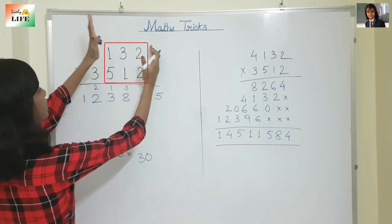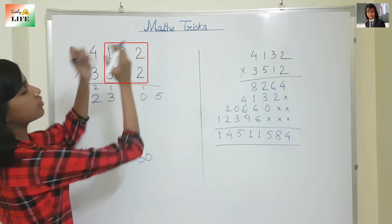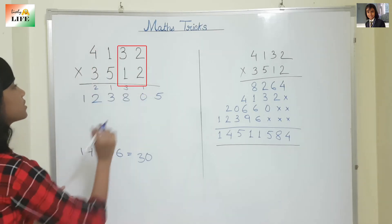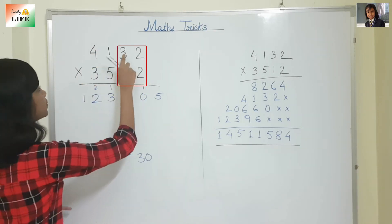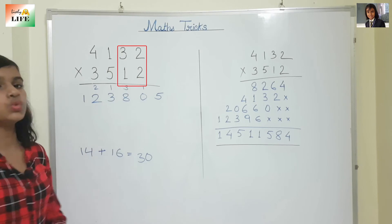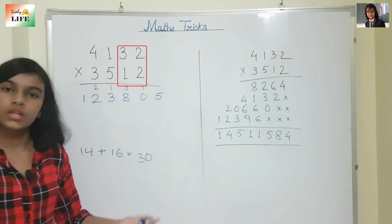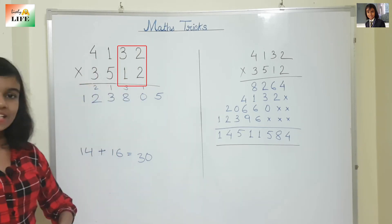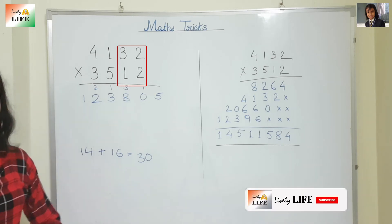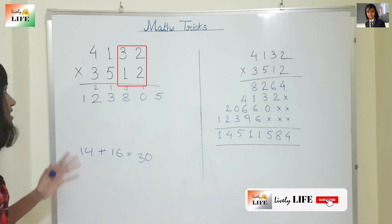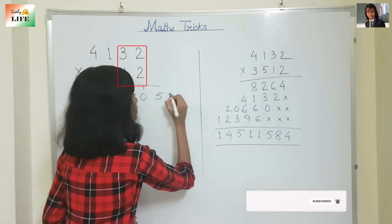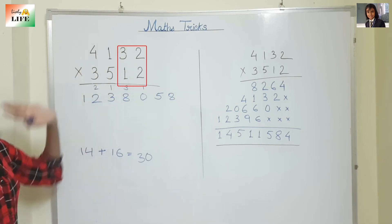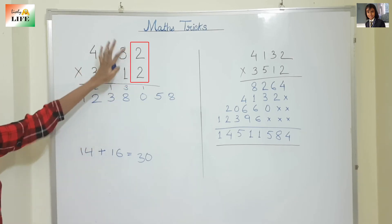Now again we reduce another column from the left side, so this is now 2 columns. Cross multiplication: 3 into 2 is 6, 2 into 1 is 2, so 6 plus 2 is 8. Then the last column: 2 into 2 is 4.